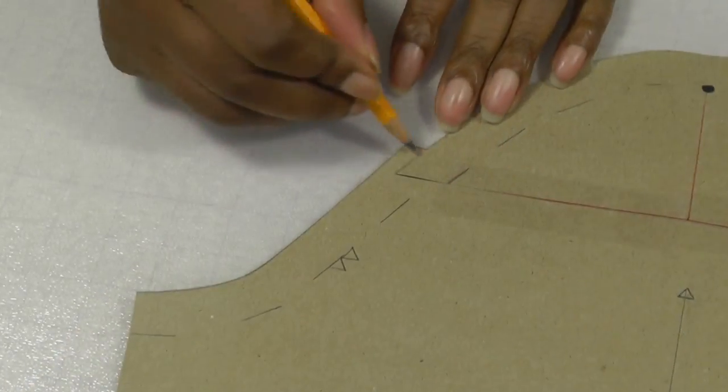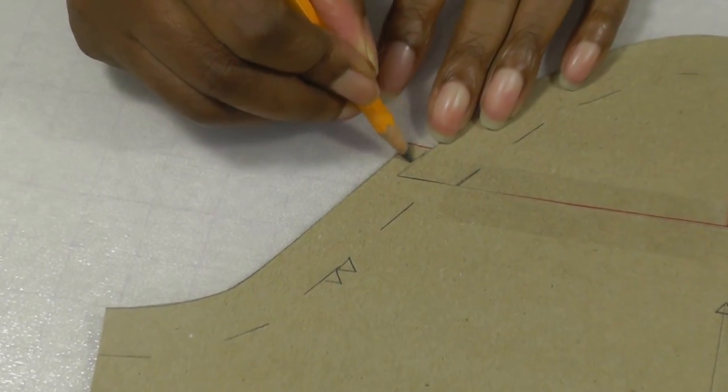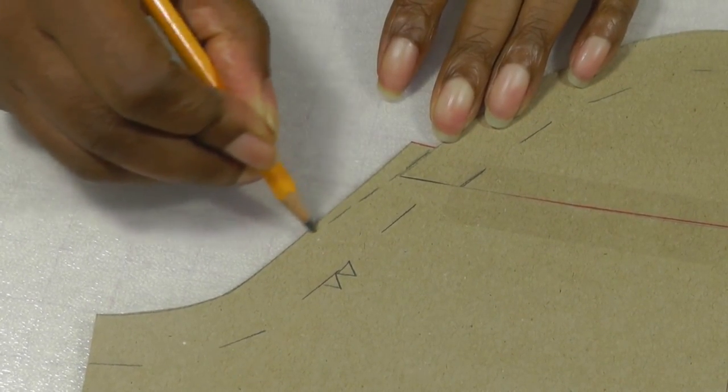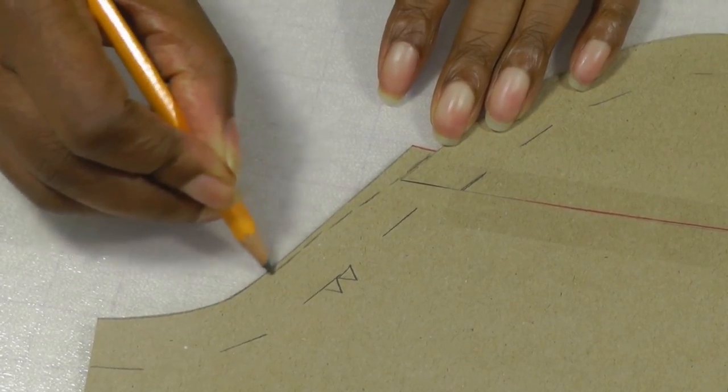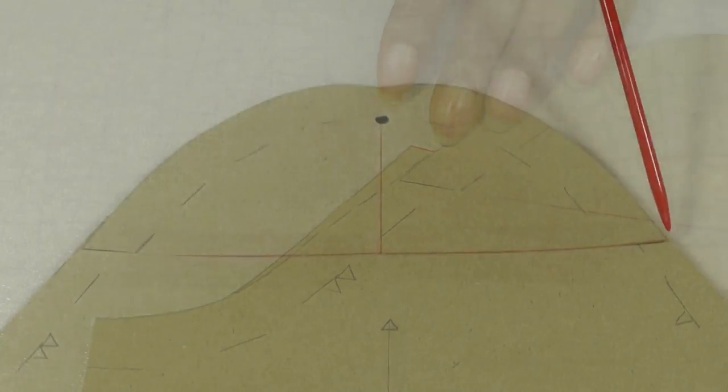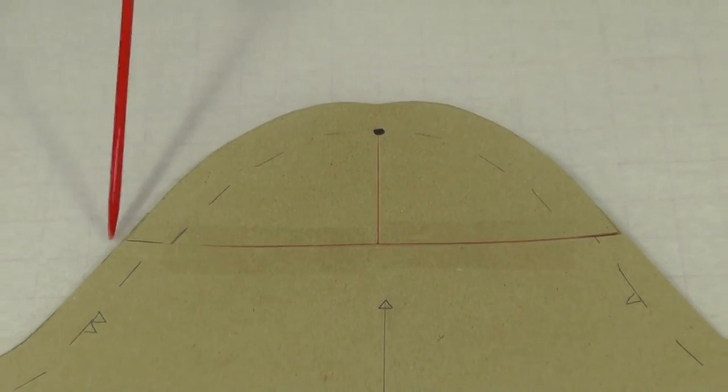Then we're going to get rid of this area here so we're going to follow the sleeve shape until it tapers off to nothing into the seam allowance like so and then cut that away to the other side. And now you have your reduced sleeve cap.